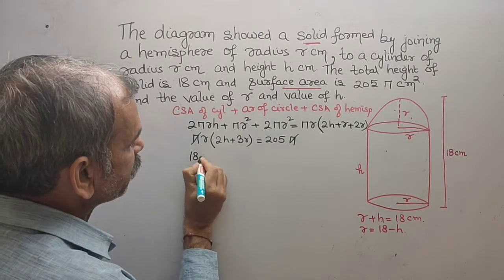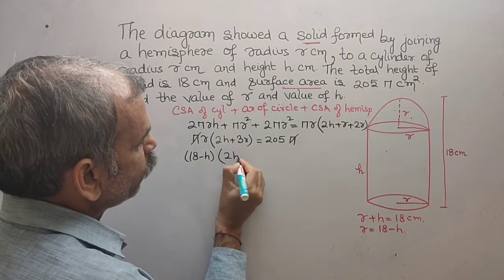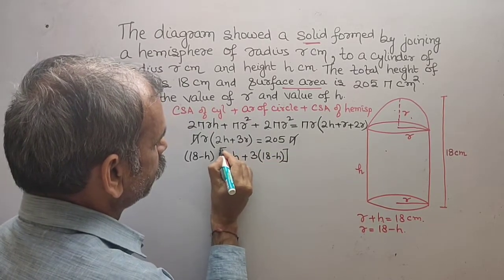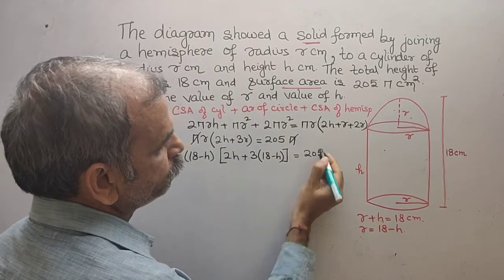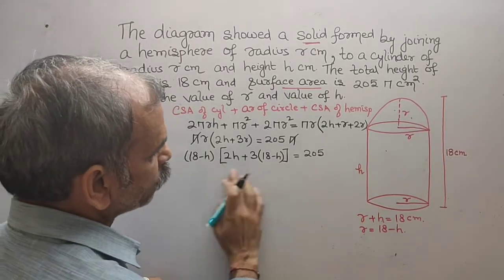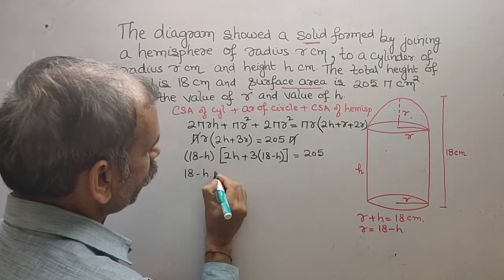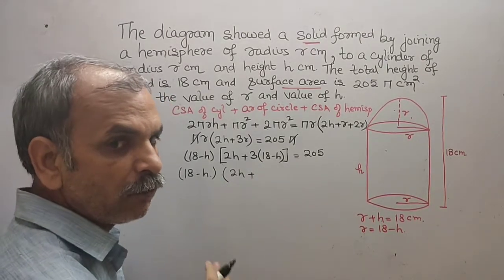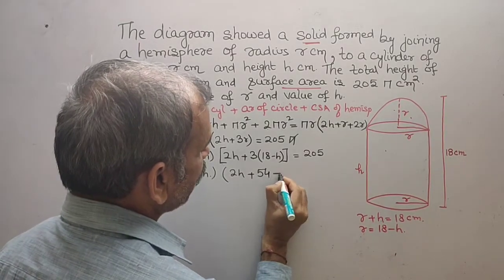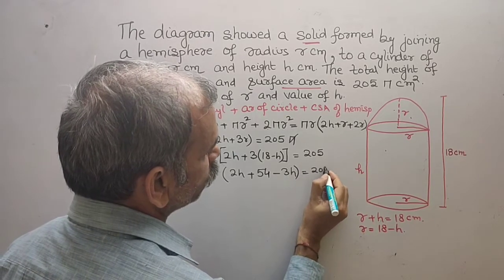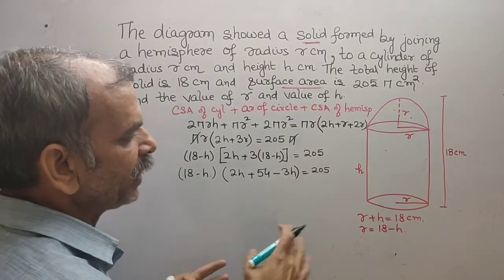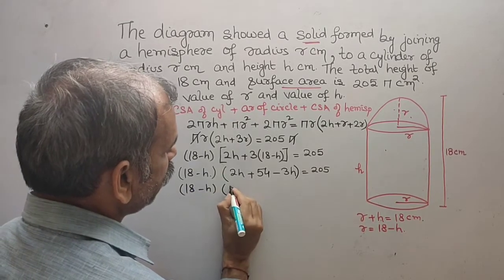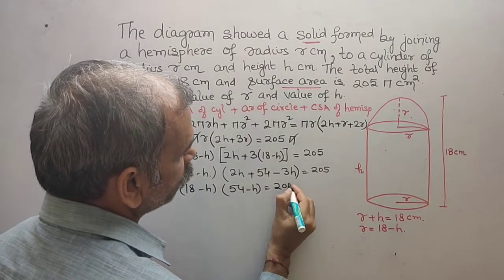Cancelling π from both sides, we substitute r = 18 − h. This gives: (18 − h)(2h + 3(18 − h)) = 205. Expanding: (18 − h)(2h + 54 − 3h) = 205, which simplifies to (18 − h)(54 − h) = 205.